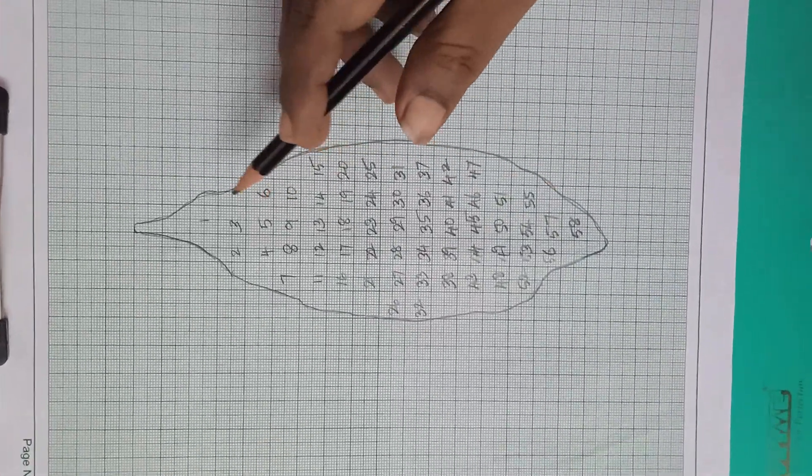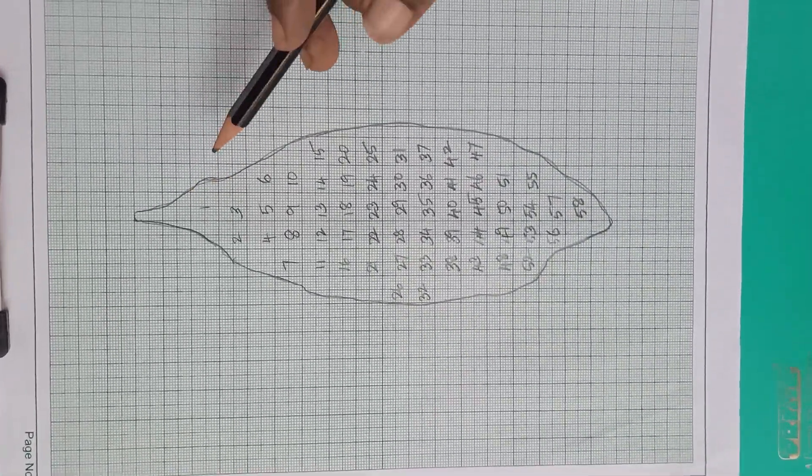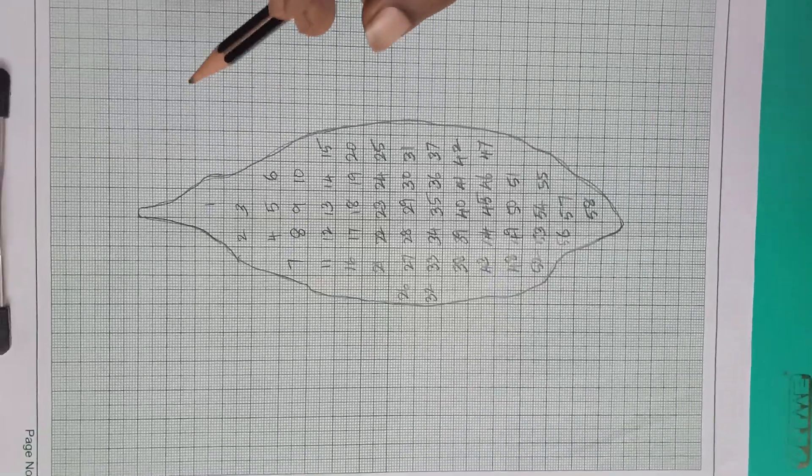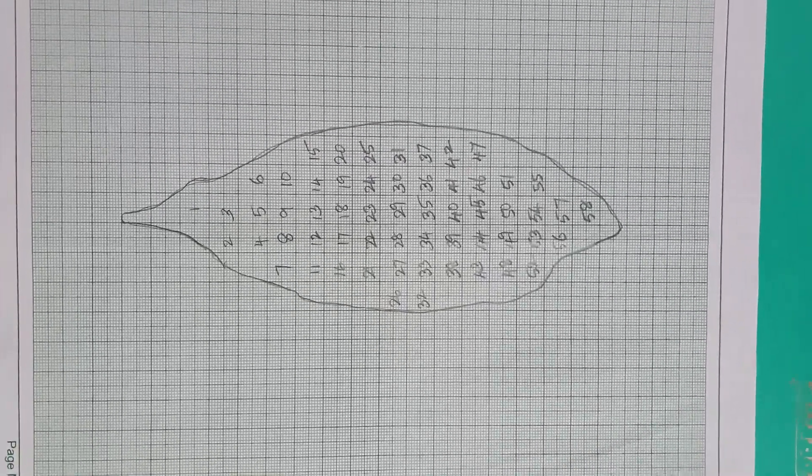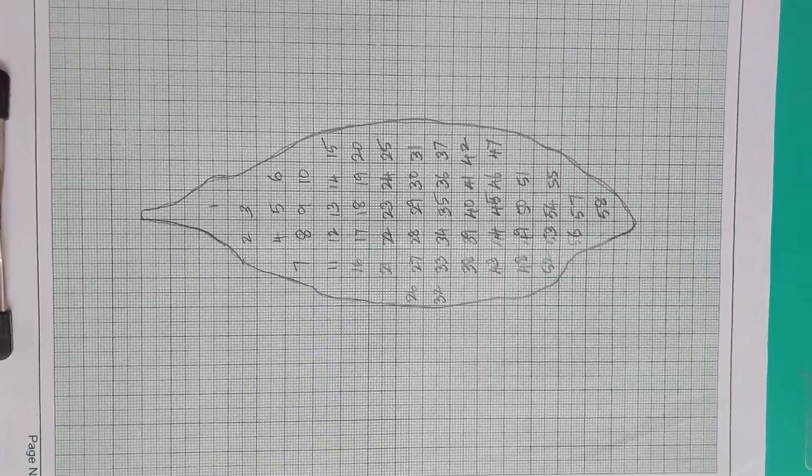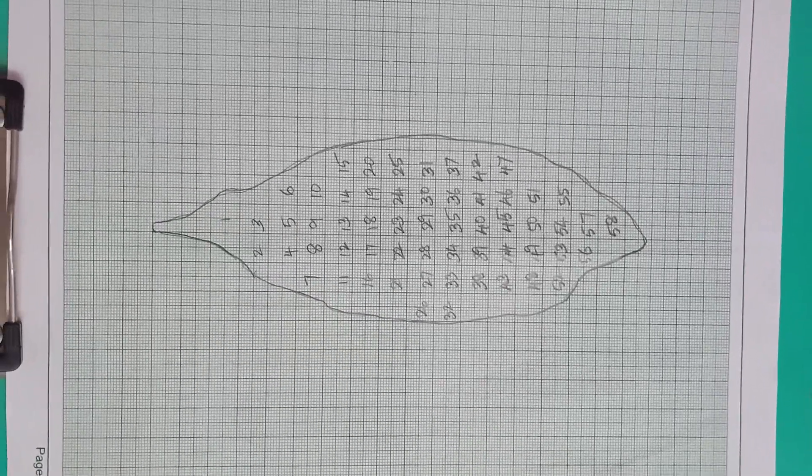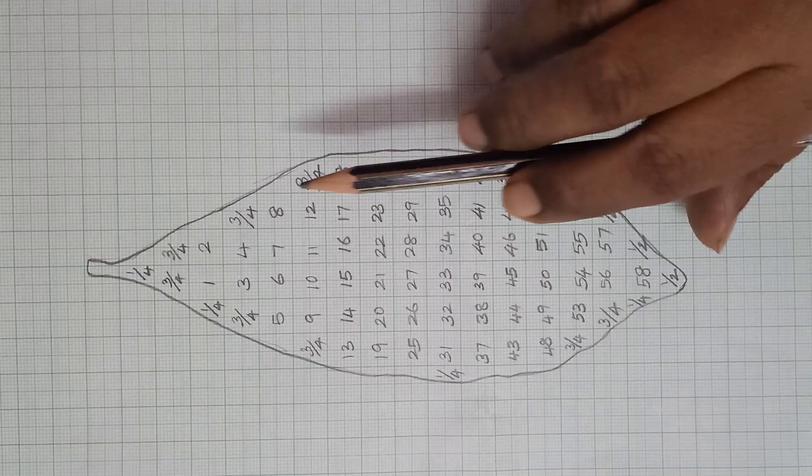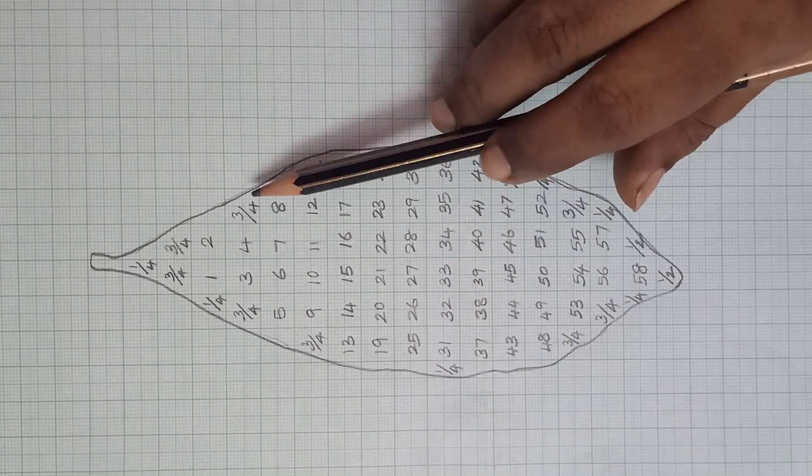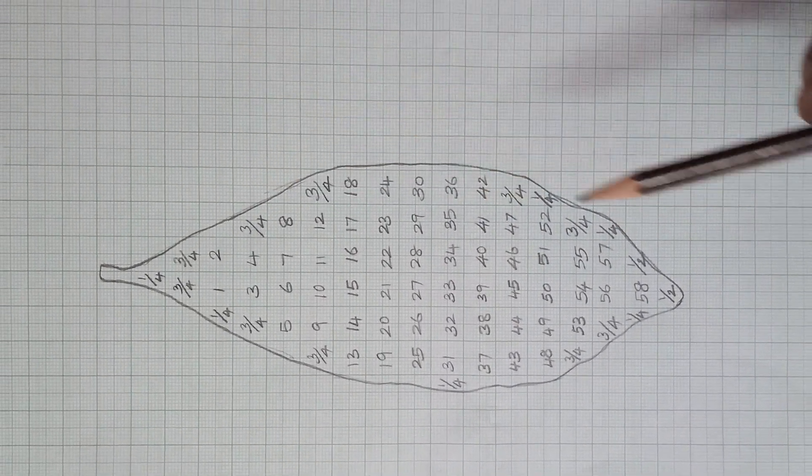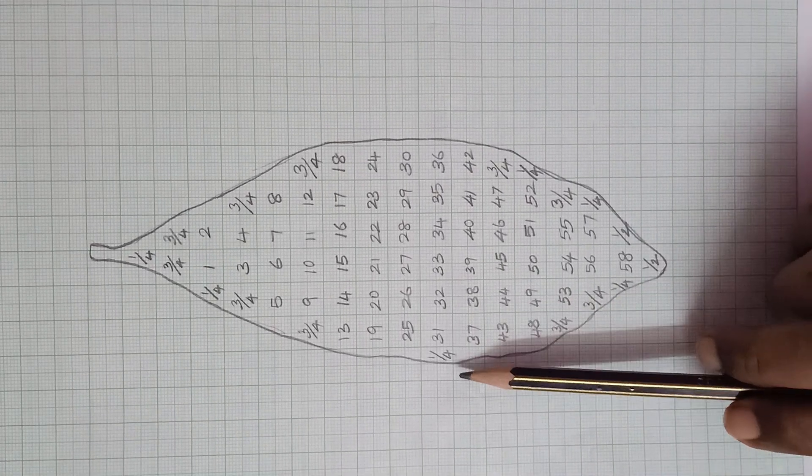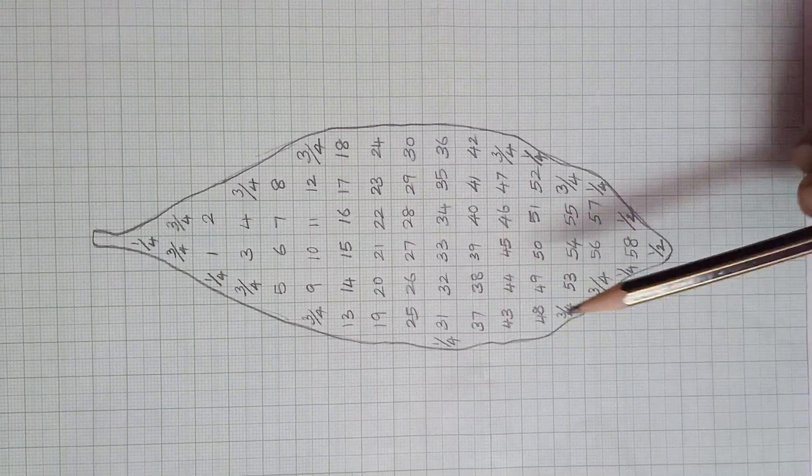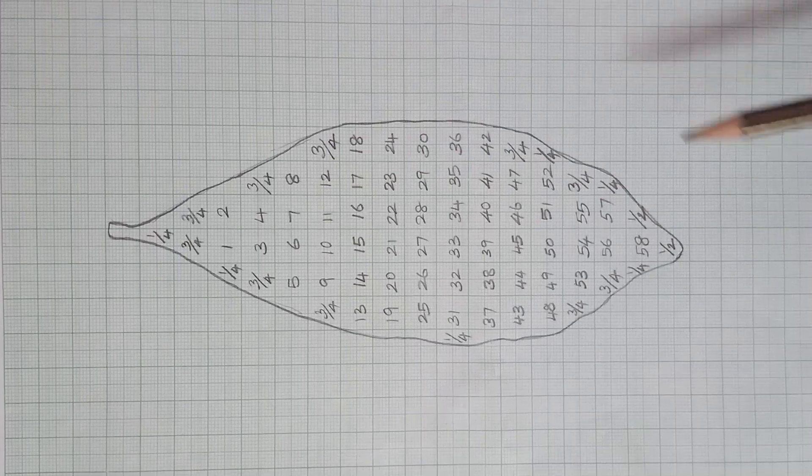Now, the remaining squares we have to mark as more than half as 3 by 4, half as 1 by 2, and below half as 1 by 4. Here, now I have marked more than half as 3 by 4, equal to half as 1 by 2, and less than half as 1 by 4. After marking the full outline of the leaf,